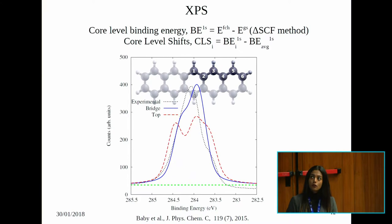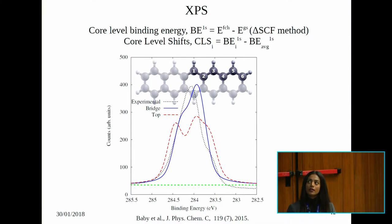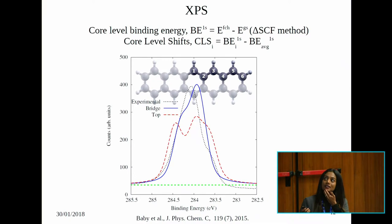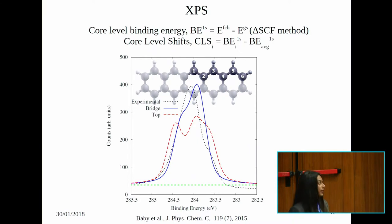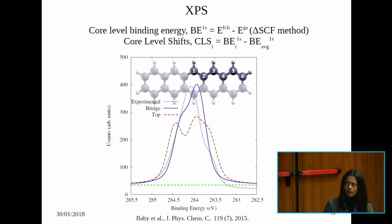For the XPS comparison, the dotted line is the experimental result. For the calculation, I computed the core level binding energy by subtracting the total energy of the ground state from the total energy of the system with a full core hole at each inequivalent carbon atom. Pentacene has six inequivalent carbon atoms, so this was done six times. The core level shift was calculated using the weighted average of binding energies as reference. The result is six sticks broadened by a pseudo-Voigt profile. The bridge site is in very good agreement with the experimental results.